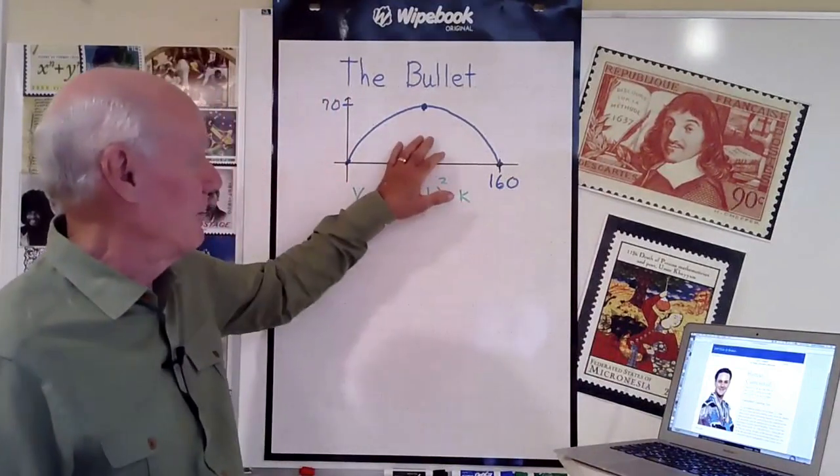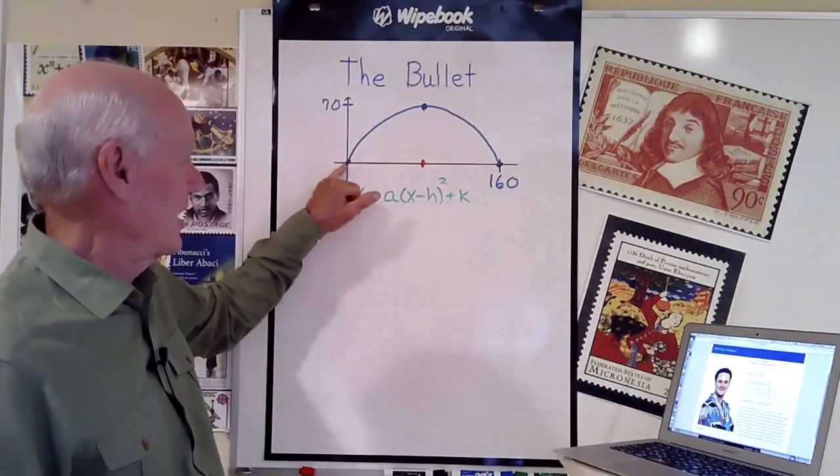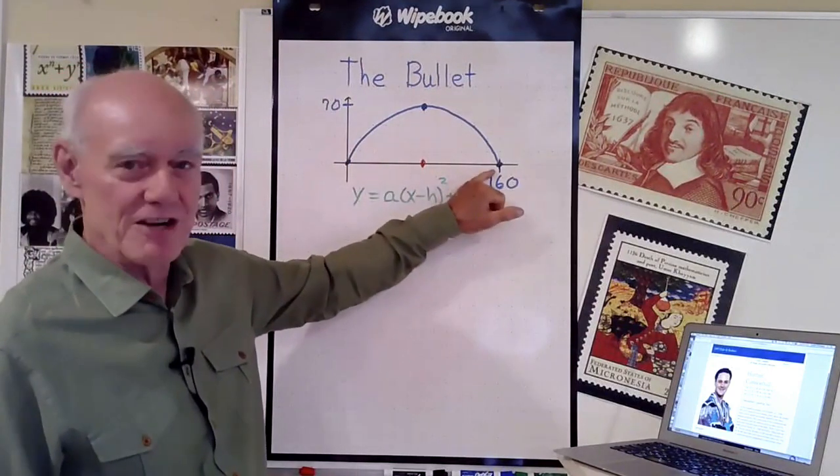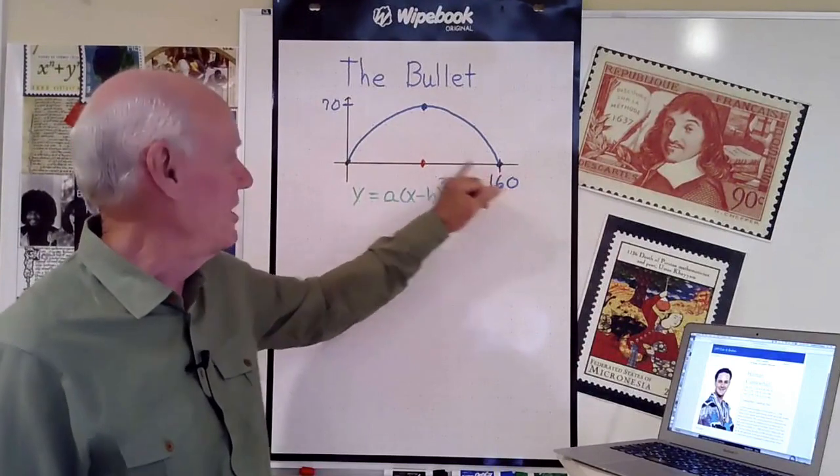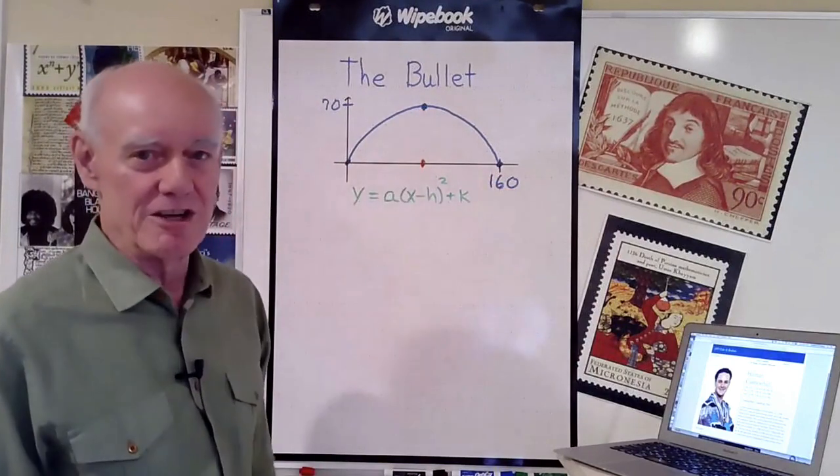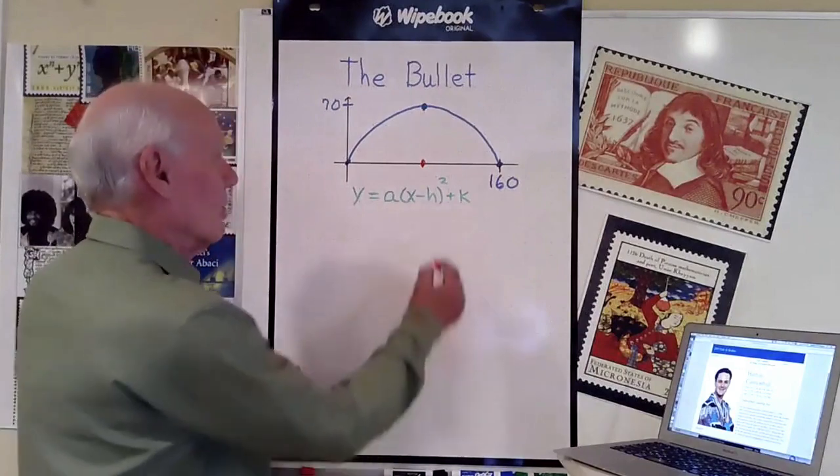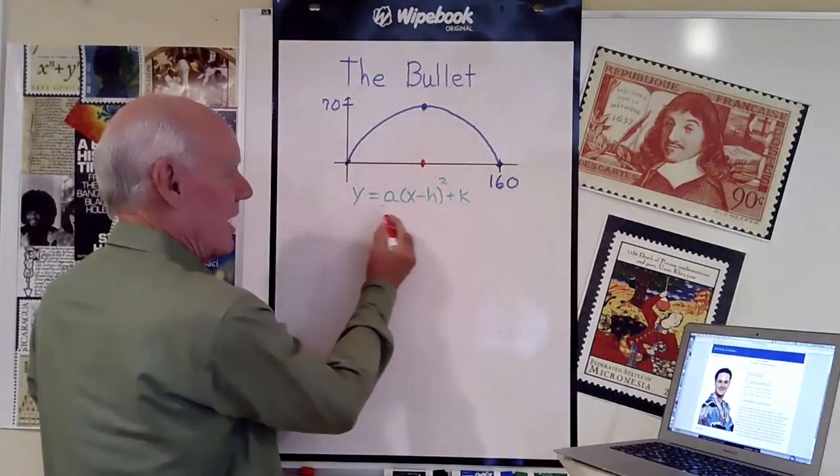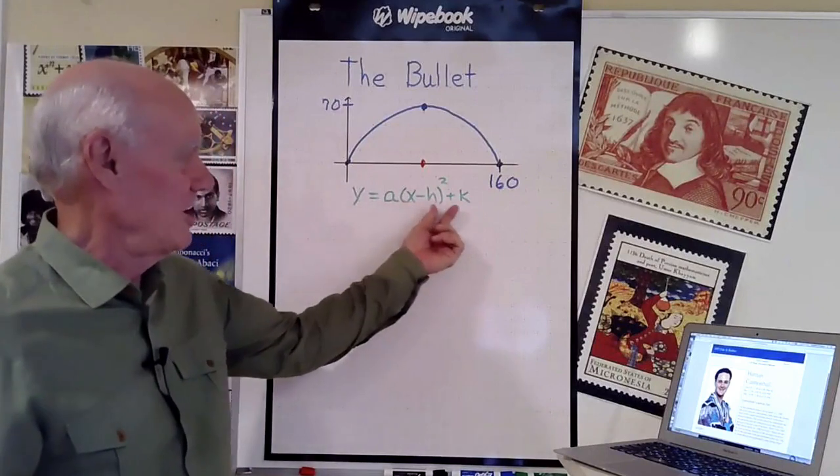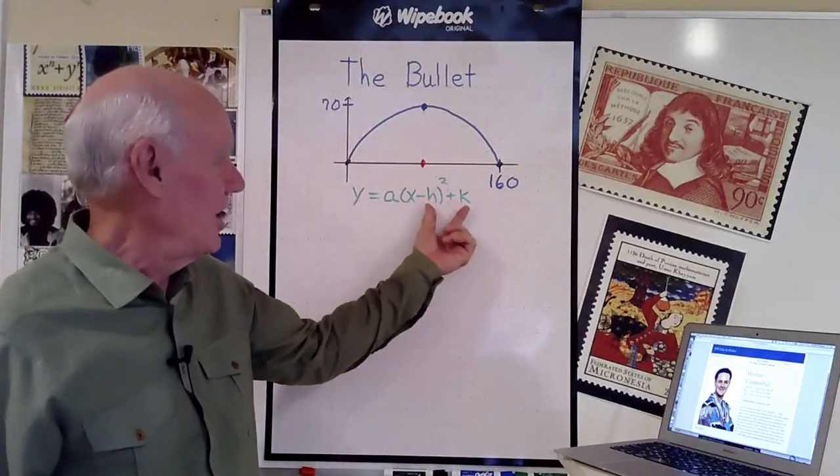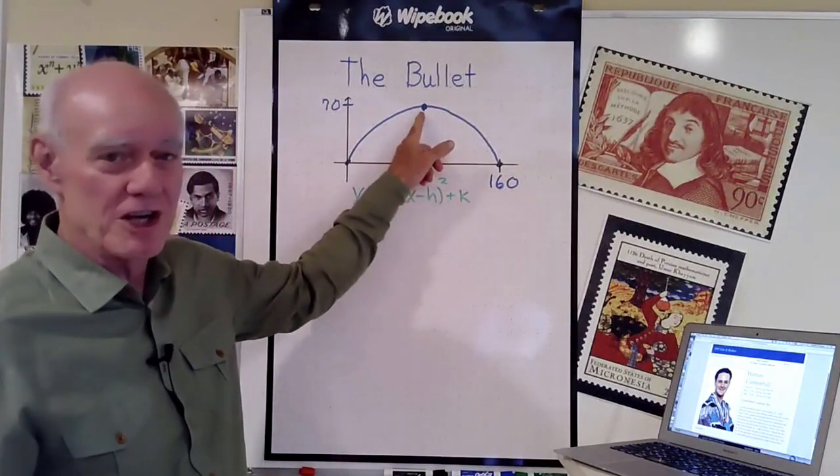Here's a diagram of the situation. He's shot out of the cannon here, lands in the safety net here. He travels a distance of 160 feet and goes to a height of 70 feet. The equation of a parabola is y equals a times (x minus h) squared plus k, where h and k are the coordinates of the vertex of the parabola.